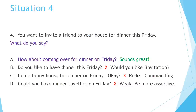The best answer is A: How about coming over for dinner on Friday? Sounds great. What's wrong with the others? B. Do you like to have dinner this Friday? — If you say 'Do you like,' you're asking what they prefer to do. For an invitation, you need to say 'Would you like to do something?' C. Come to my house for dinner on Friday. — This sounds kind of rude; it's like you're commanding them to do it. D. Could you have dinner together on Friday? — This is weak. You need to be more assertive. When you say 'Could you do something?' it's like you're begging them to do something with you.